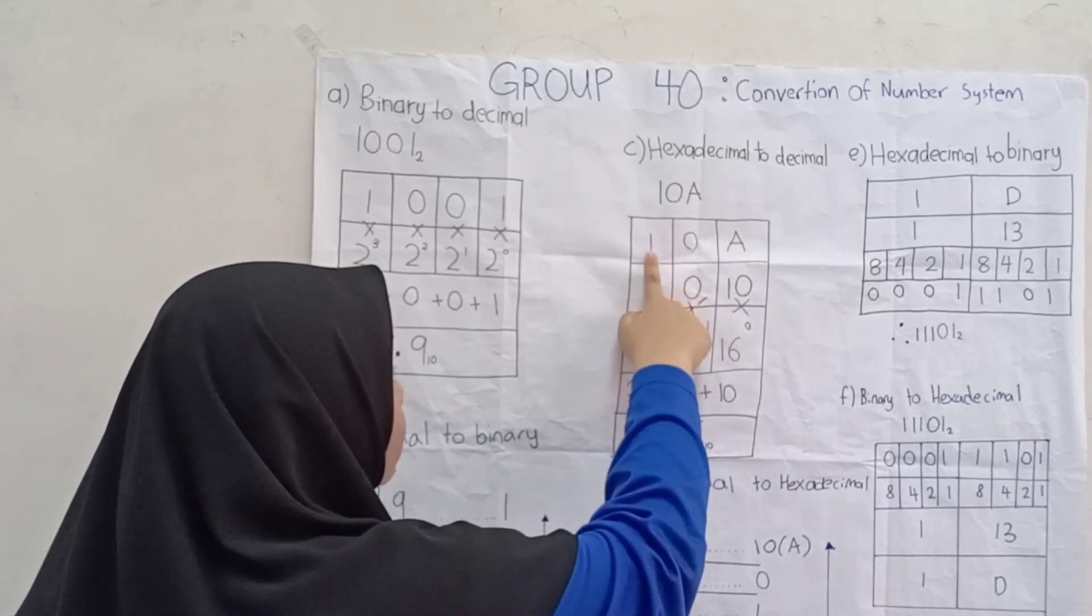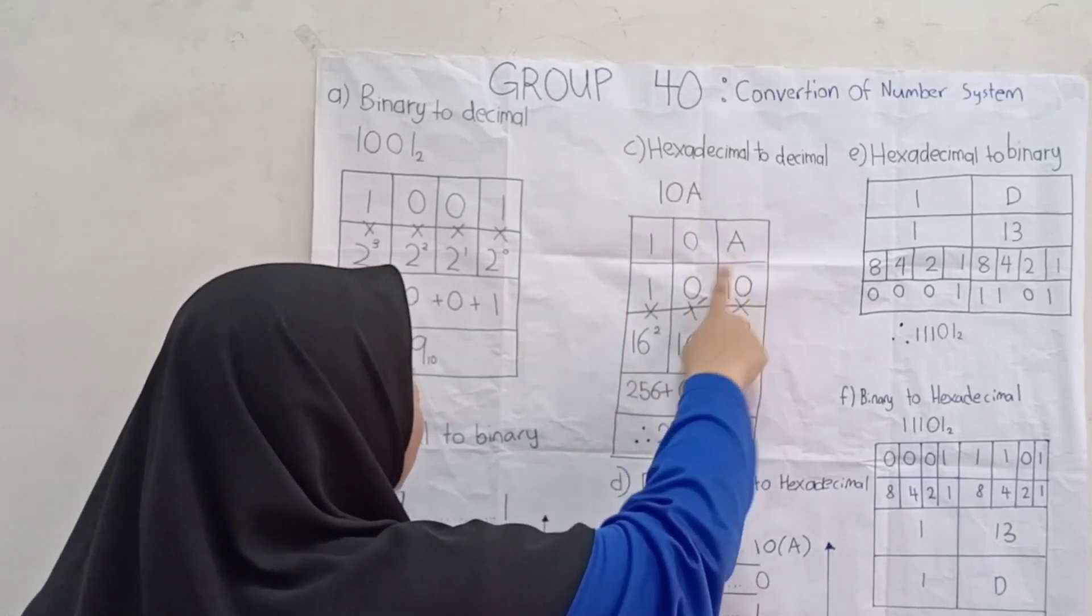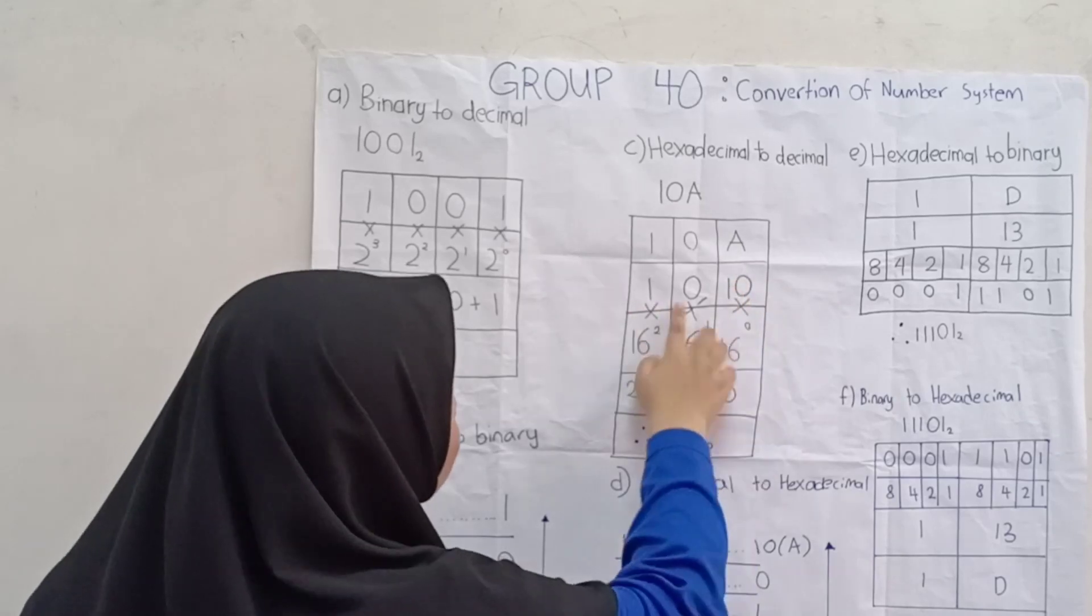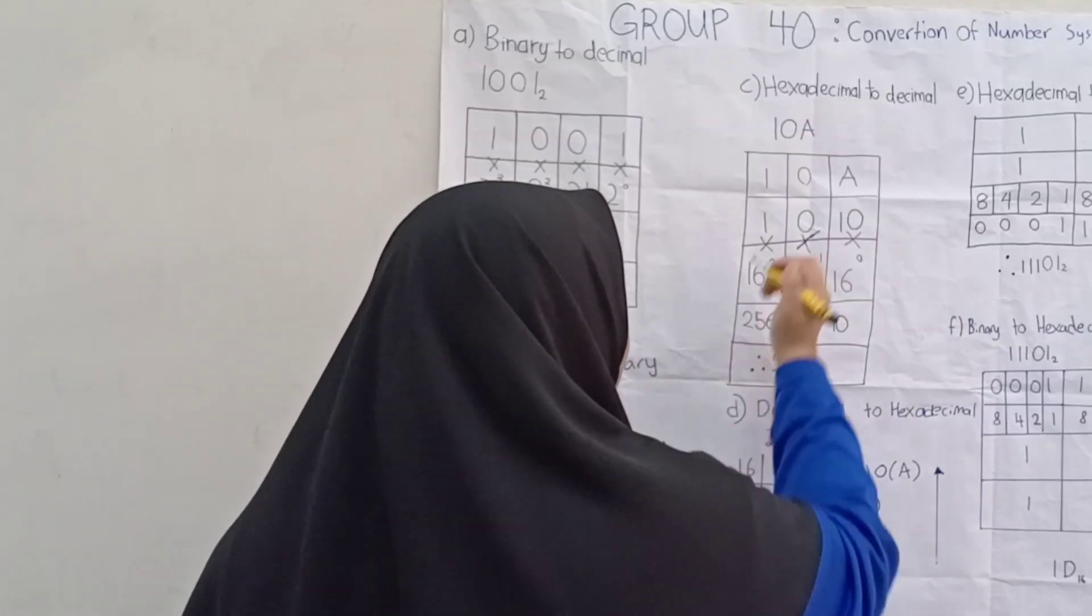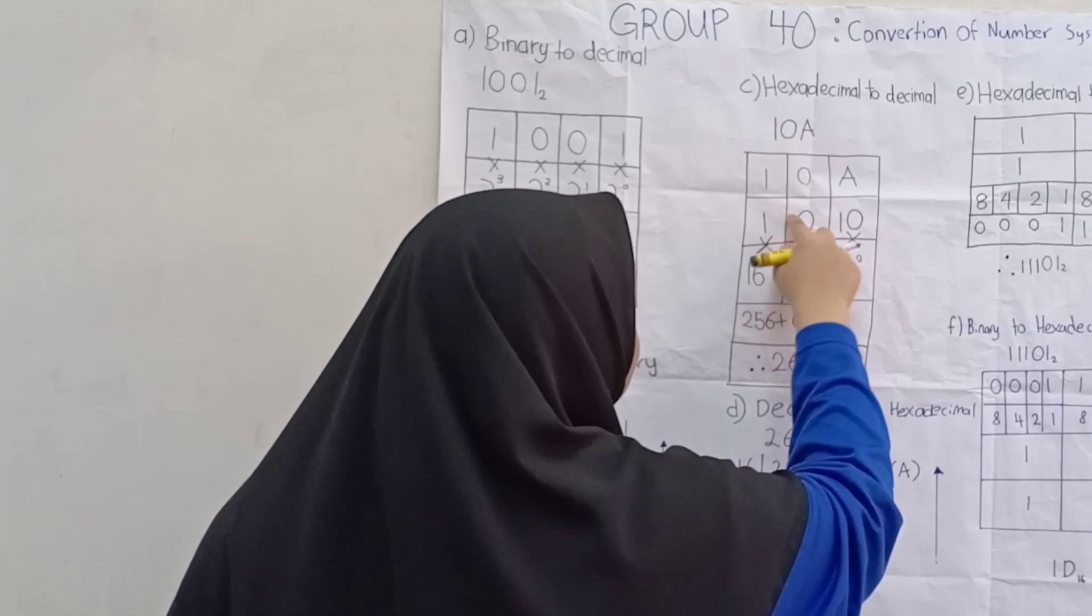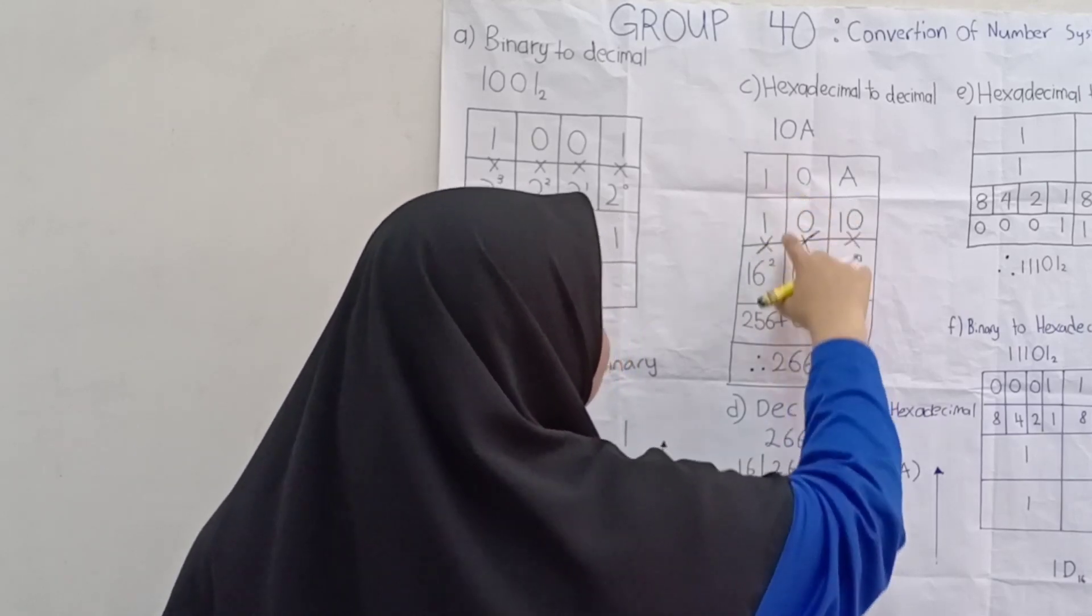Contohnya, 1, 0 dengan A. A sama dengan 10. So, kita darab begini. Jangan lupa simul darab ni, memandangkan kita perlu darabkan ni dengan ni.